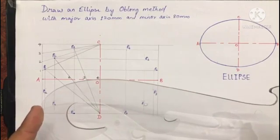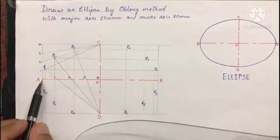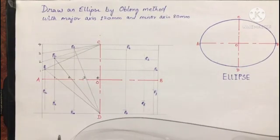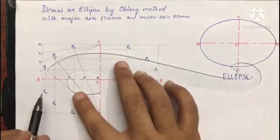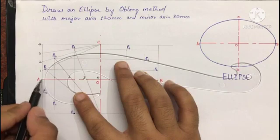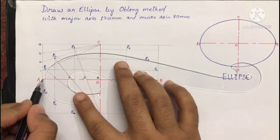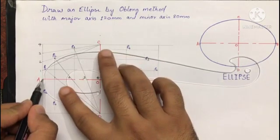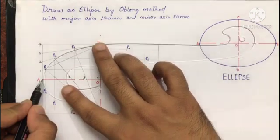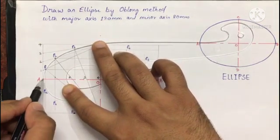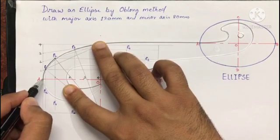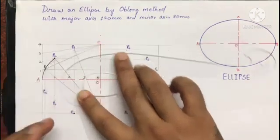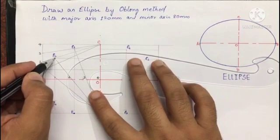Now using a French curve we will connect all these points to get a smooth curve. Try to join minimum three points at a time. Here we try to connect A, P1, and P2. This curve must be dark.